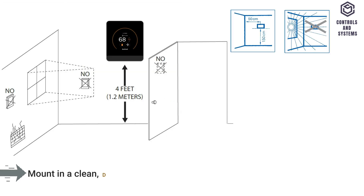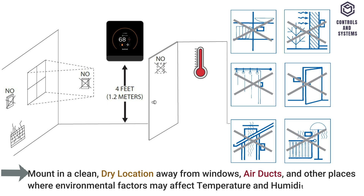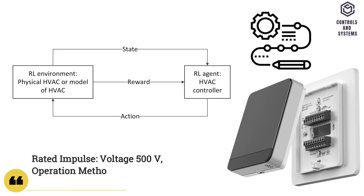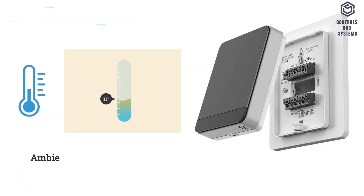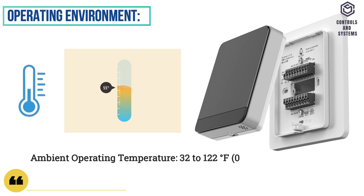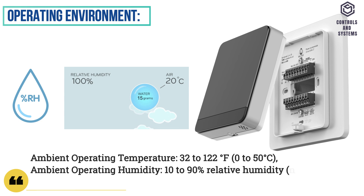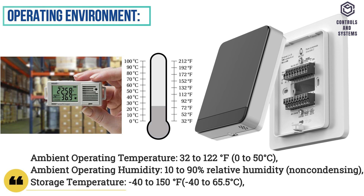Mount in a clean, dry location away from windows, air ducts, and other places where environmental factors may affect temperature and humidity readings. Other Data. Rated impulse voltage is 500 volt. Operation method is type 1B action. Pollution degree is 2. Ambient operating temperature is 0 to 50 degrees Celsius. Ambient operating humidity is 10 to 90% RH, non-condensing. Storage temperature is minus 40 to 65.5 degrees Celsius.